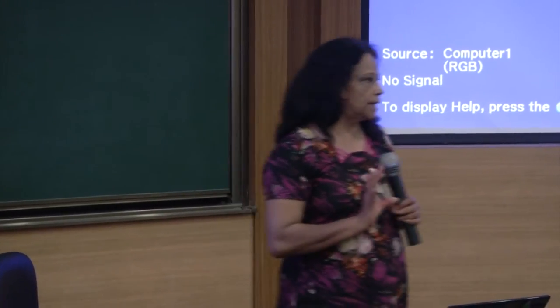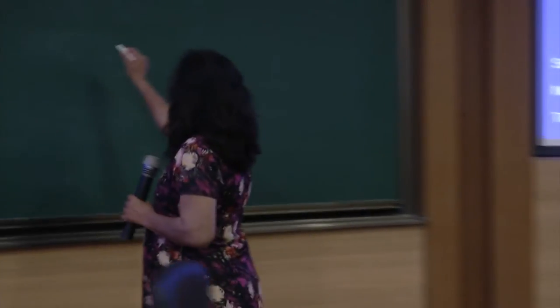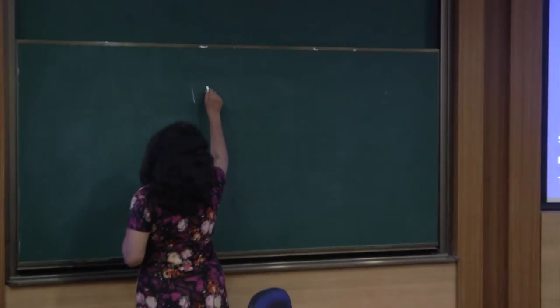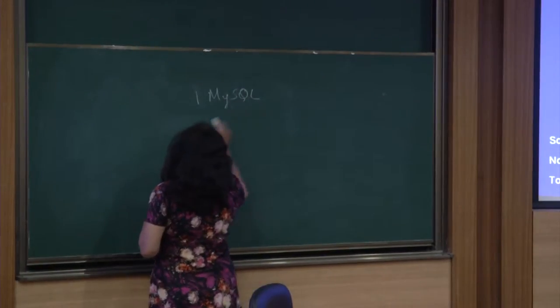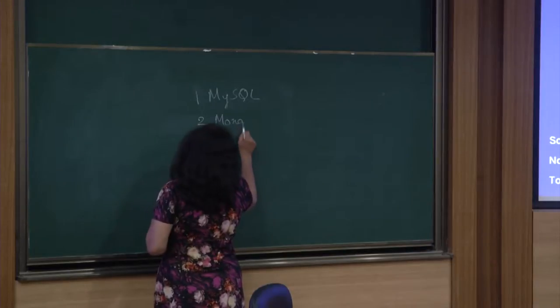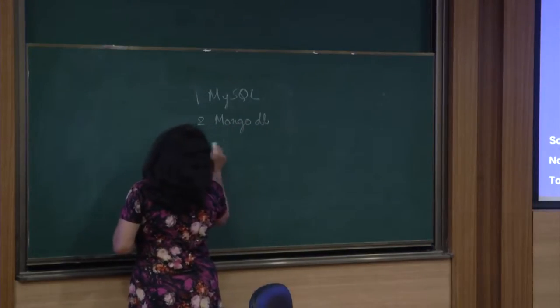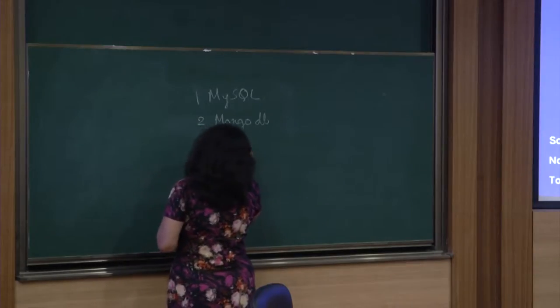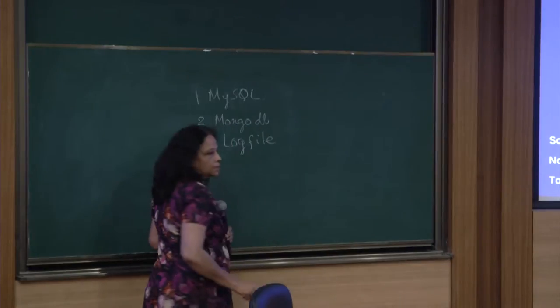Now the data — IIT Bombay creates three kinds of data. One is MySQL database, second is MongoDB, and third is the log files. This is generated in the server we have today.